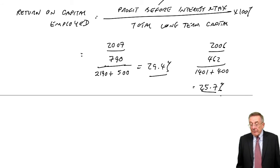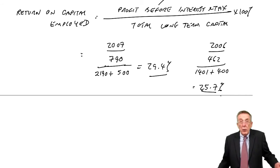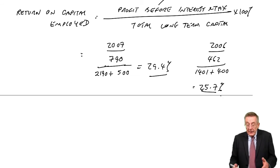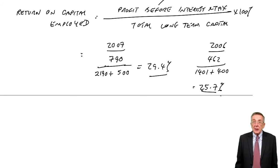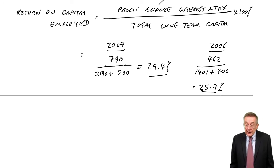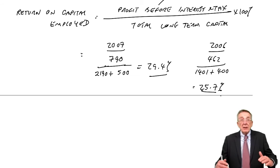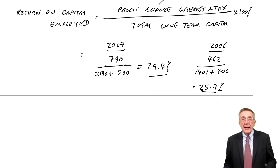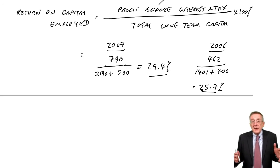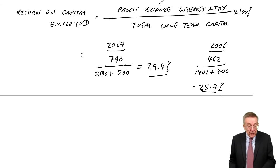How can a company increase its return on capital employed? There are two ways. You can either make more profit on everything you sell. If you make more profit on everything you sell, then that's going to increase the return on capital. Or alternatively, you can sell more efficiently - make more sales for the amount of capital involved.